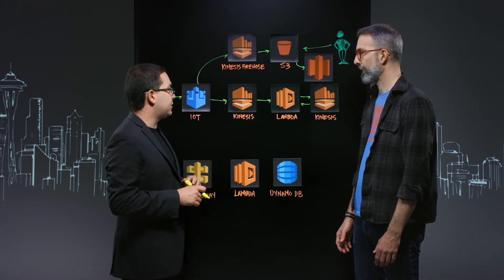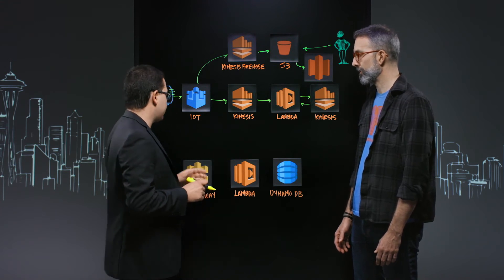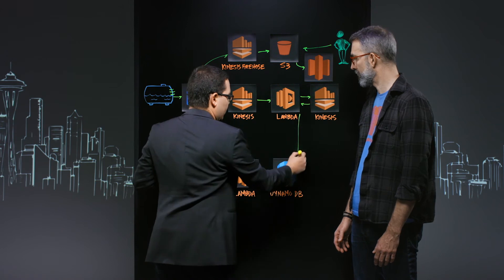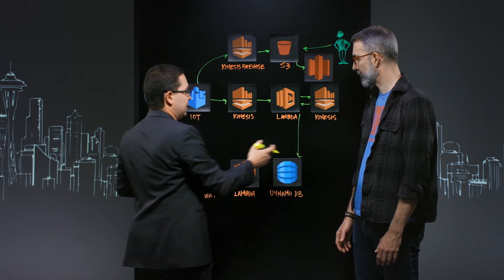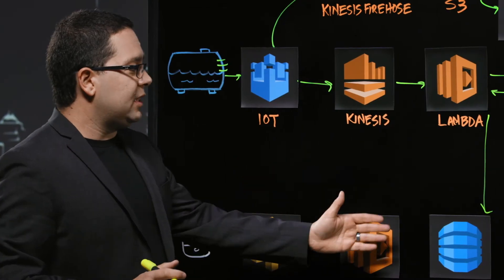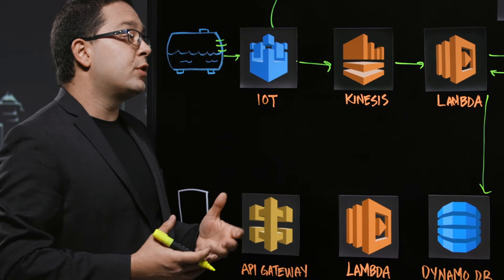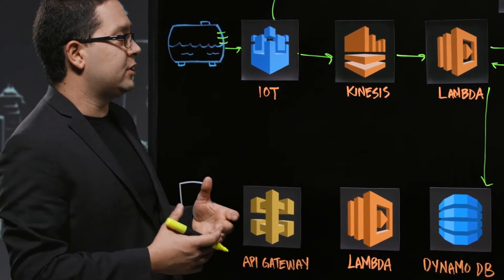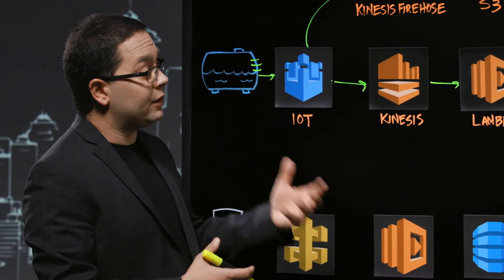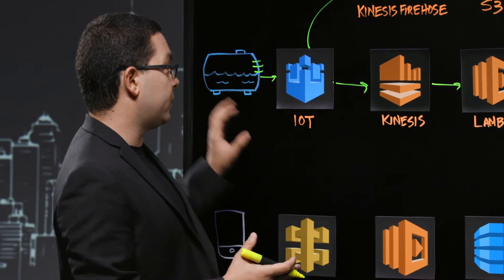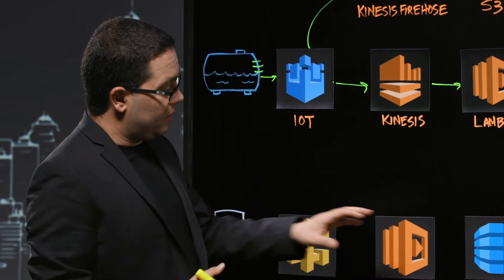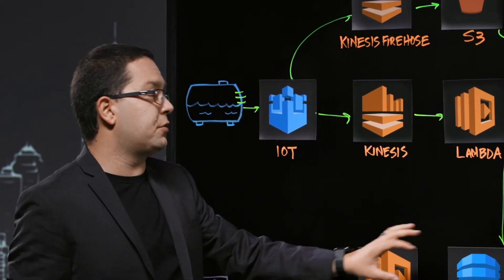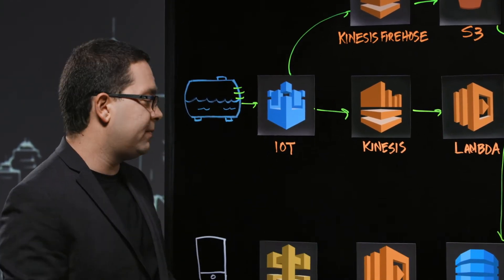Lambda sends notifications via push notifications out to the mobile apps. But before that, we store real-time data in DynamoDB — an active working dataset with real-time information about which tanks are full or filling and what's happening in the real world. Remember, up in S3 we have historical time series data, whereas here in DynamoDB we have the real-time, here-and-now data.